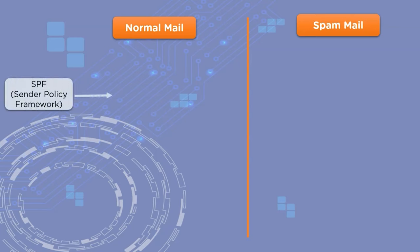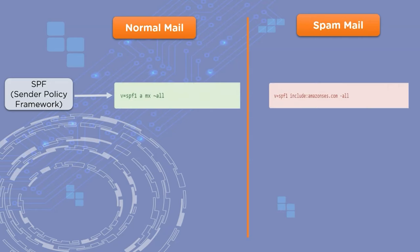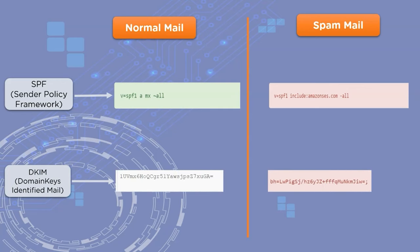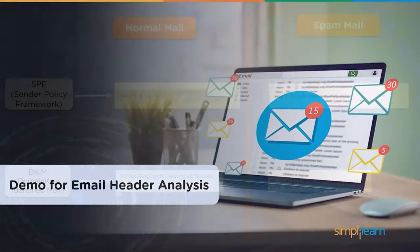To understand the difference between a spam and a normal email, let's look at two fields. The first is SPF — Sender Policy Framework — which identifies spam email. In a normal mail, we'll see a plus sign before 'all,' indicating it's a normal mail, while in a spam email, we see a hyphen sign, indicating spam. The second field is DKIM, which uses identification keys — if the keys match between the sender email and the received email, it's authenticated; if not, it's termed as spam.